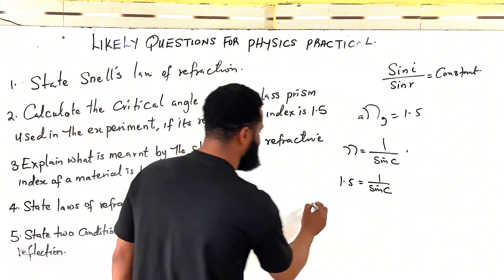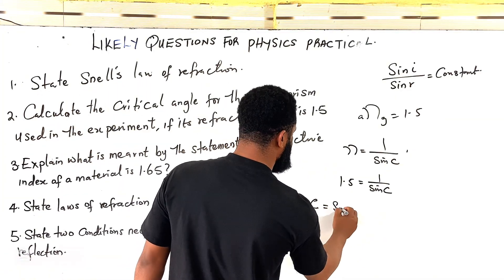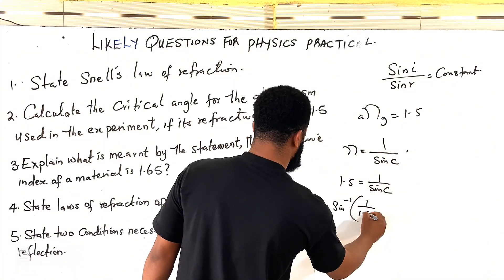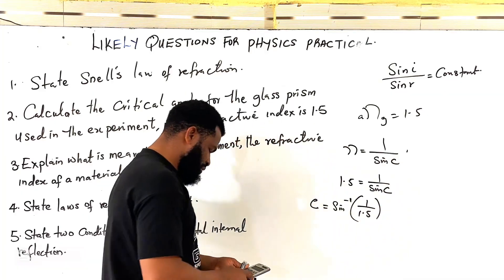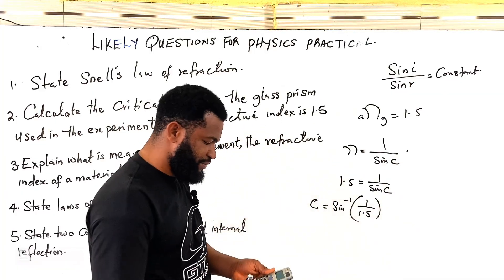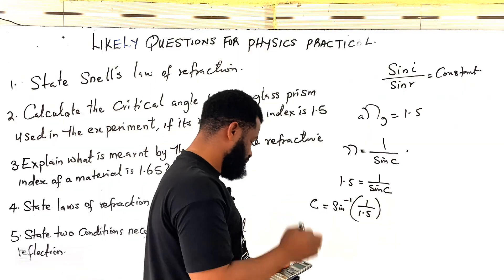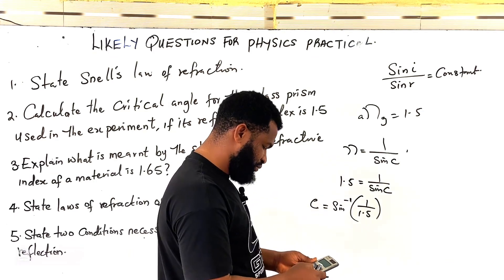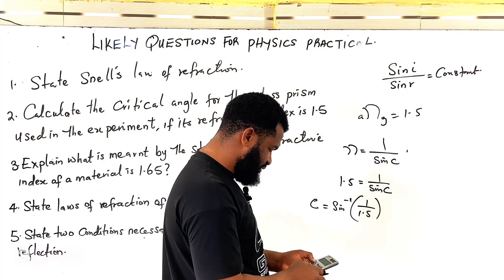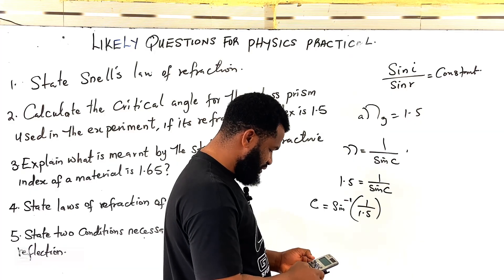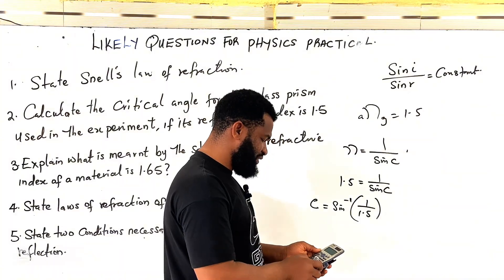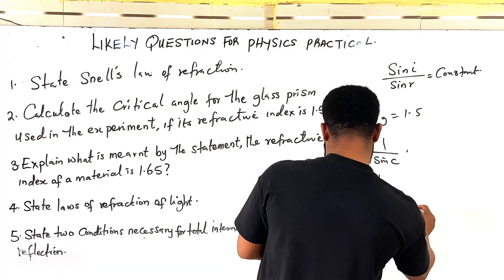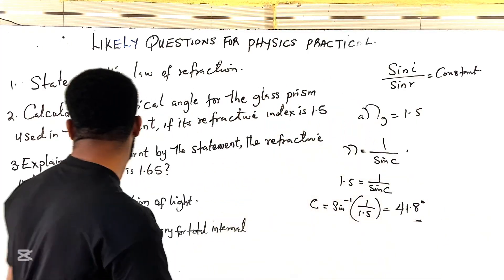Therefore, the critical angle can be found by saying C is equal to sine inverse all in brackets, 1 over 1.5. And this is going to be 1 divided by 1.5 is given by 0.66667. So sine inverse of 0.66667 is given as 41. So the answer is 41.8 degrees. That's number 3.